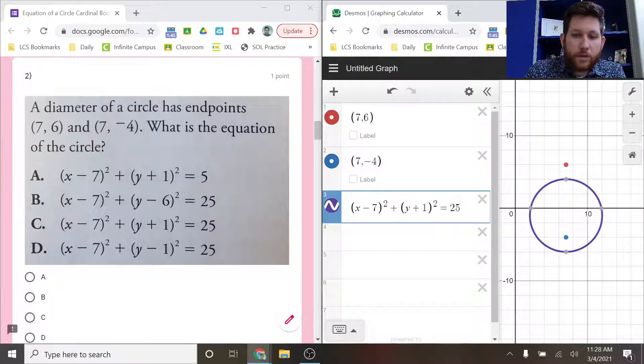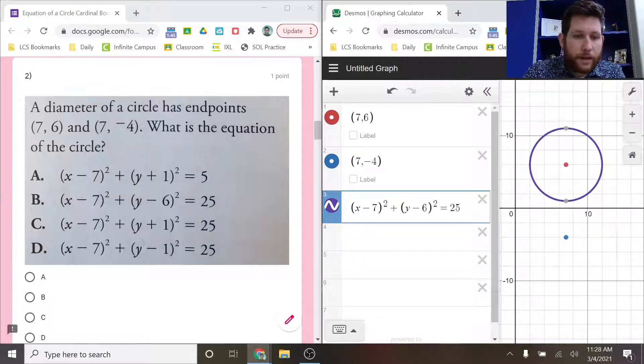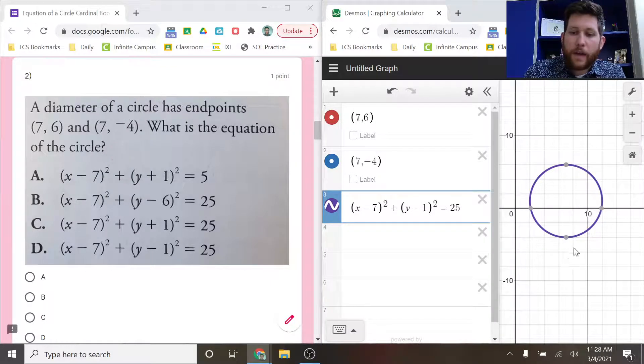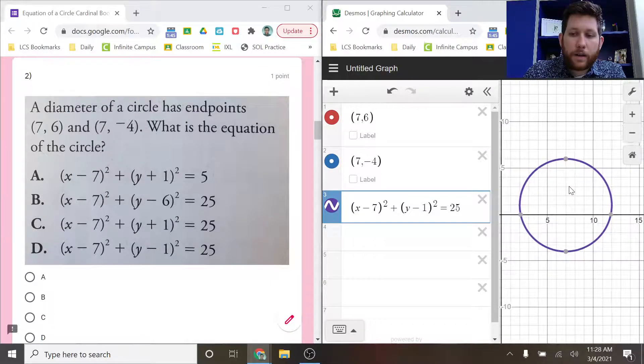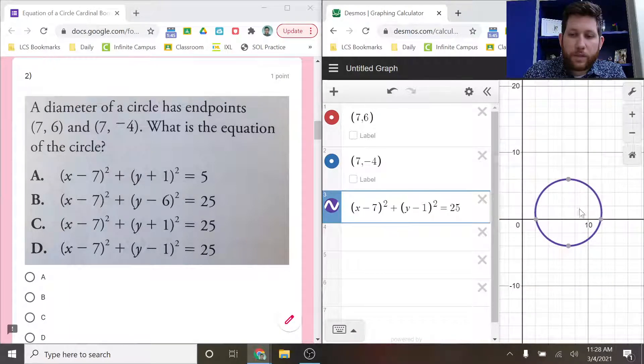So the rest of them have 25. So let's try B here, minus 6. That's not it. All right, let's try minus 1. Yeah, look at that. Notice how it hits my two points that were on my graph. I could kind of zoom in here, but you can kind of see what's going on on the graph.